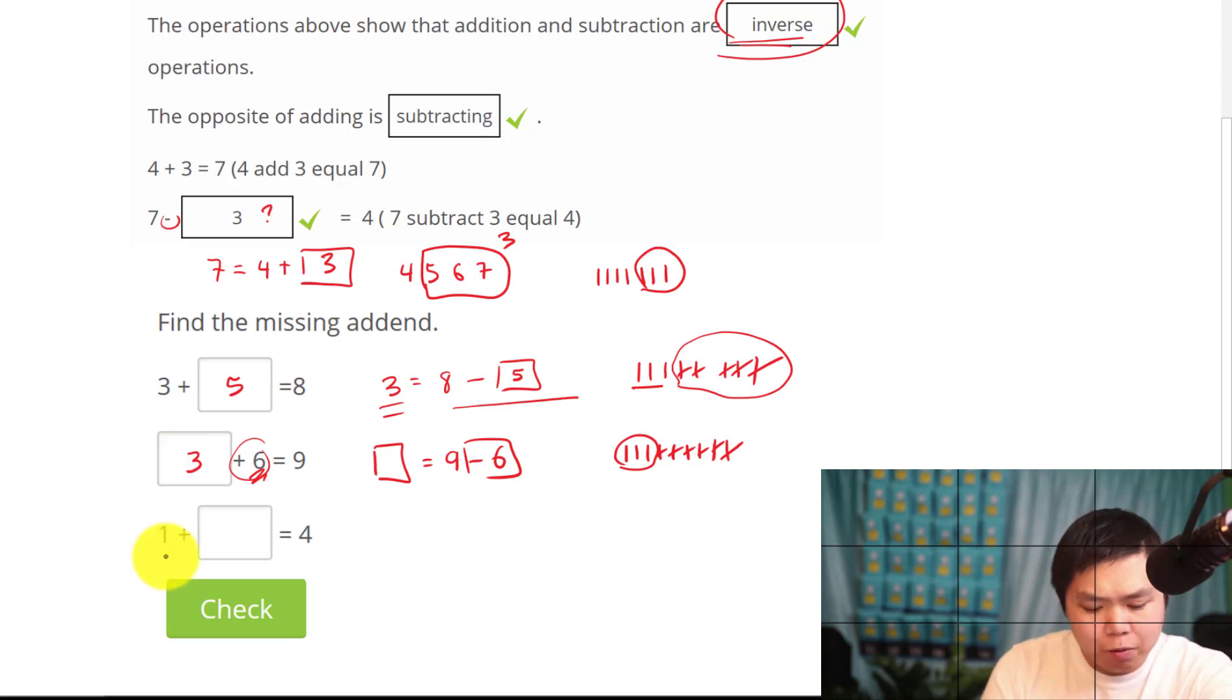And what about this one? 1 plus a box equal to 4. What is the opposite of plus? Again, minus. So what we have here is 1 equal to 4 minus that box. What is that going to be? Same thing. We're going to start with 4, 1, 2, 3, 4. And we're going to count all the way backward until we get to 1. Keep going, keep going. Oh, there you go. That's 1. So what's this? 3. So the box is 3.